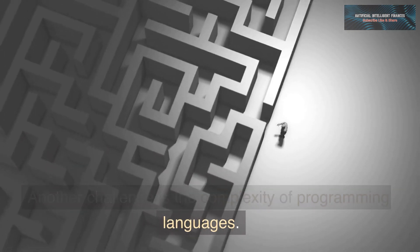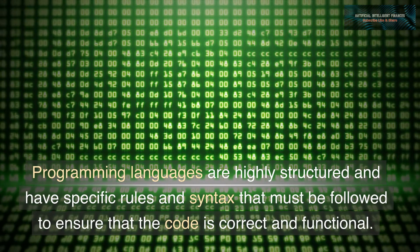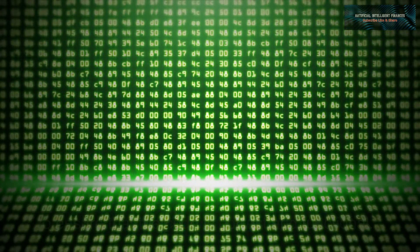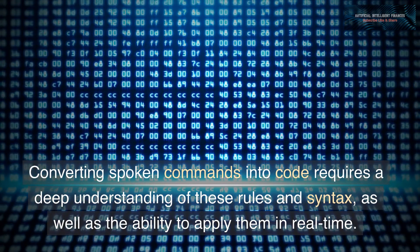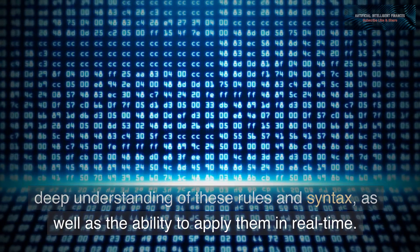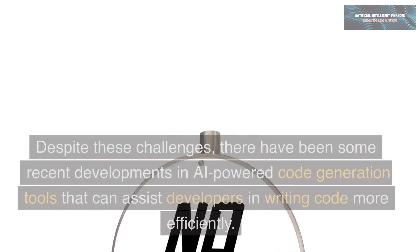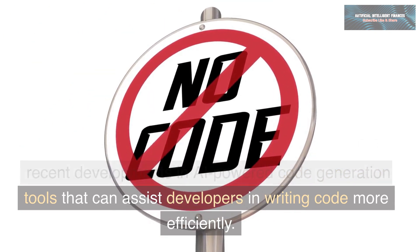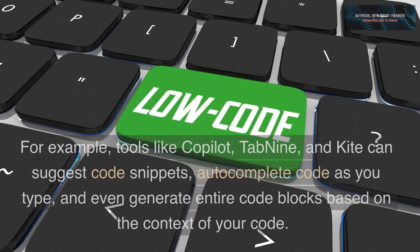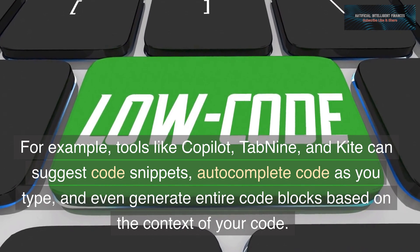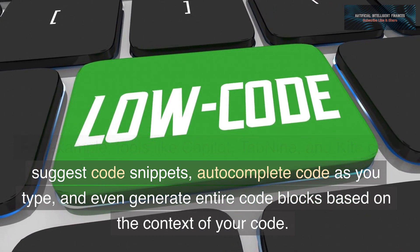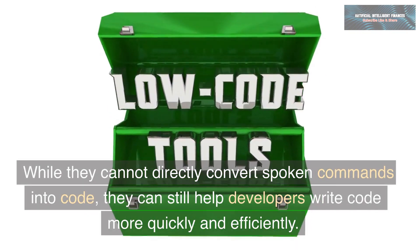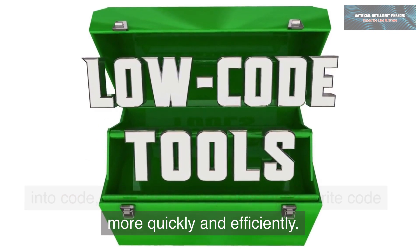Another challenge is the complexity of programming languages. Programming languages are highly structured and have specific rules and syntax that must be followed to ensure the code is correct and functional. Converting spoken commands into code requires a deep understanding of these rules and syntax, as well as the ability to apply them in real-time. Despite these challenges, tools like CoPilot, TabNine, and Kite can suggest code snippets, autocomplete code as you type, and even generate entire code blocks based on context, helping developers write code more quickly and efficiently.